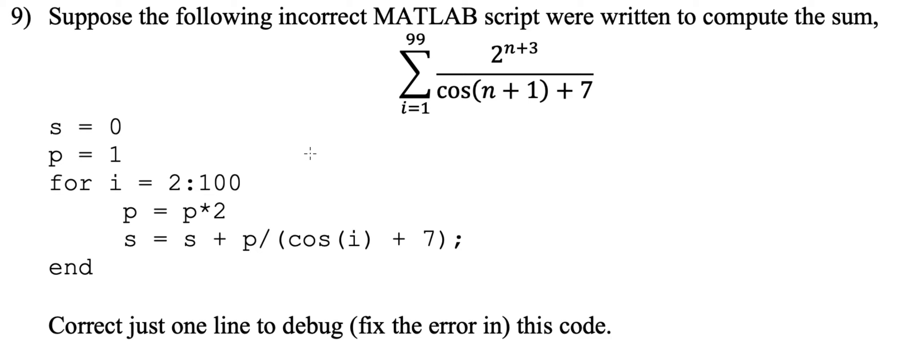Number nine is a pretty quick question. It says suppose the following incorrect MATLAB script was written to compute the sum, so we're computing some of the series, and we just have to correct one line to fix the error in this code.